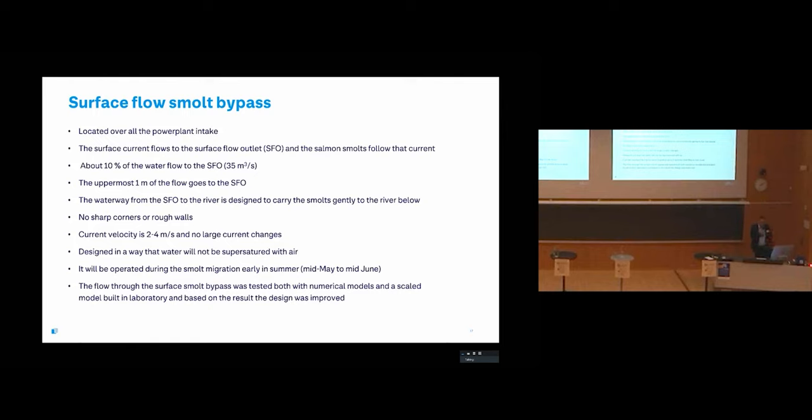It's designed in a way that the water will not be supersaturated with air. It will be operated during the smolt migration, usually mid-May to mid-June, but it will be monitored when we have smolts running. We have tested this both with numerical models and a scale model that was built in laboratory, and based on those results the design was improved.